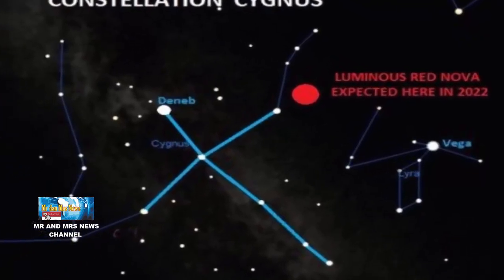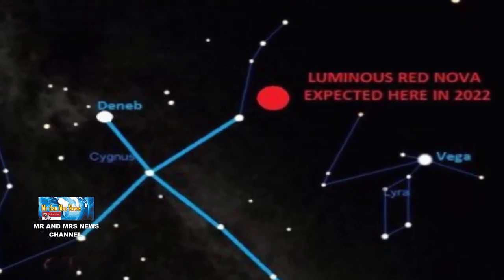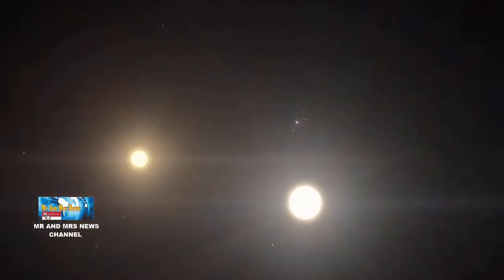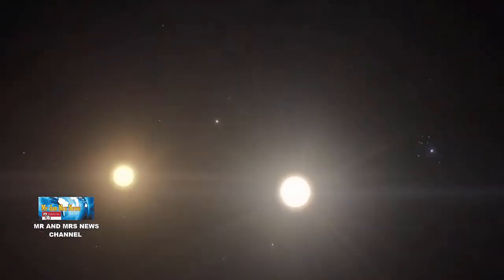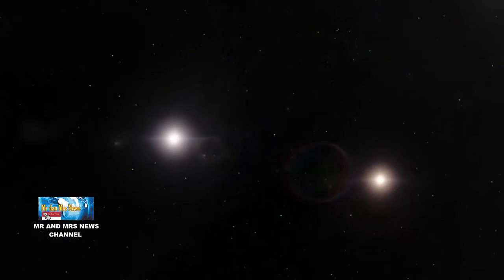Bintang binar berada di konstelasi Cygnus sekitar 1800 tahun cahaya jauhnya dari bumi. Sistem bintang KIC 932-2227 merupakan binar kontak, karena kedua bintang berbagi atmosfer yang sama. Kedua bintang ini mengorbit satu sama lain setiap 11 jam.